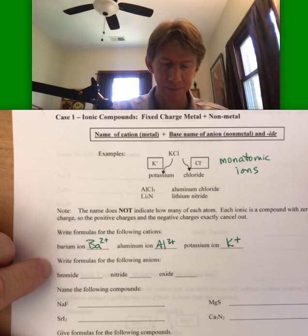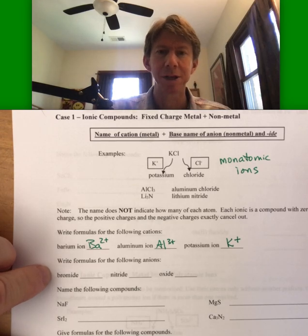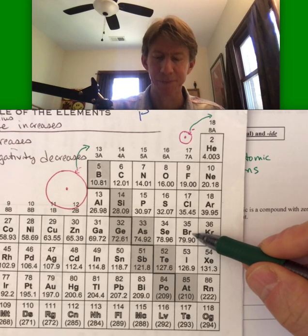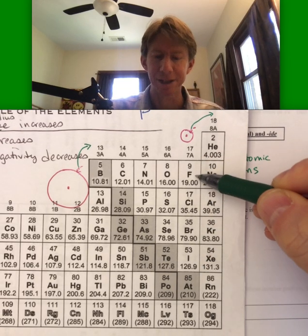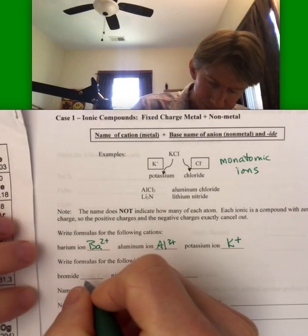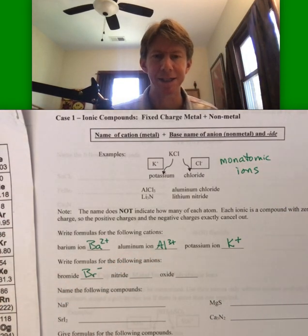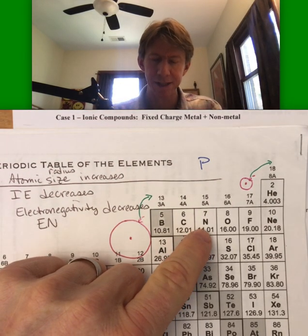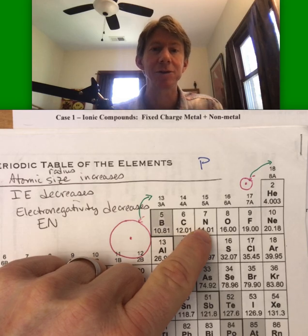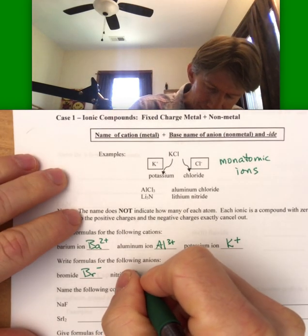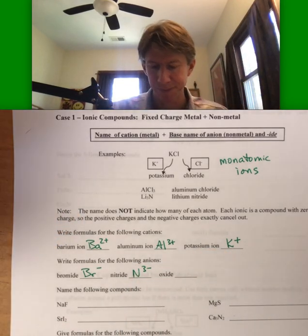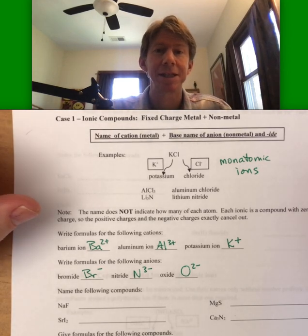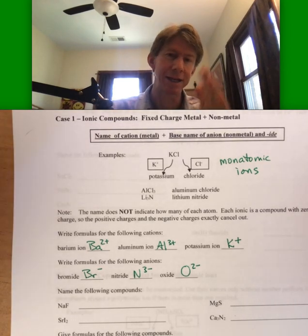Formulas for the following anions. Bromide — we look for bromine. Bromine is in the halogens column and group, and these are the minus one ions, so I write the chemical symbol and a minus. Nitride is nitrogen — it's in the group with minus three charges, so that's N three minus. And oxygen is O two minus because it's in the second column next to the halogens.